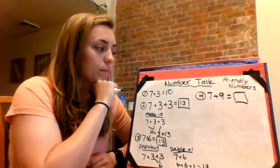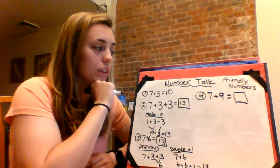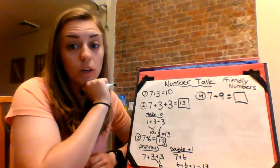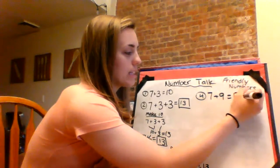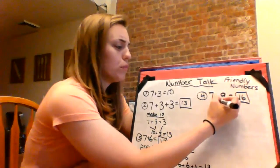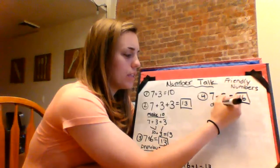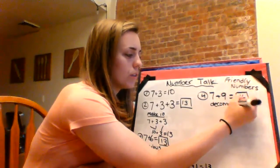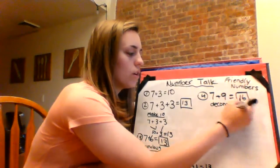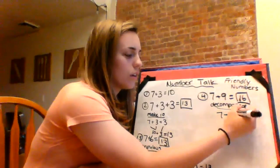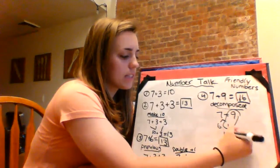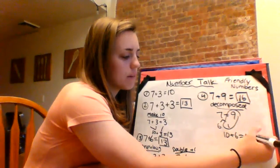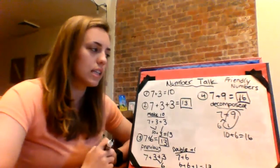All right, let's whisper-shout that answer in three, two, one. Sixteen. And we get sixteen. So, if we decomposed the number or broke it down, we could borrow one from the seven to make ten, and that gives us six left. And you'd have ten plus six, and that is sixteen.